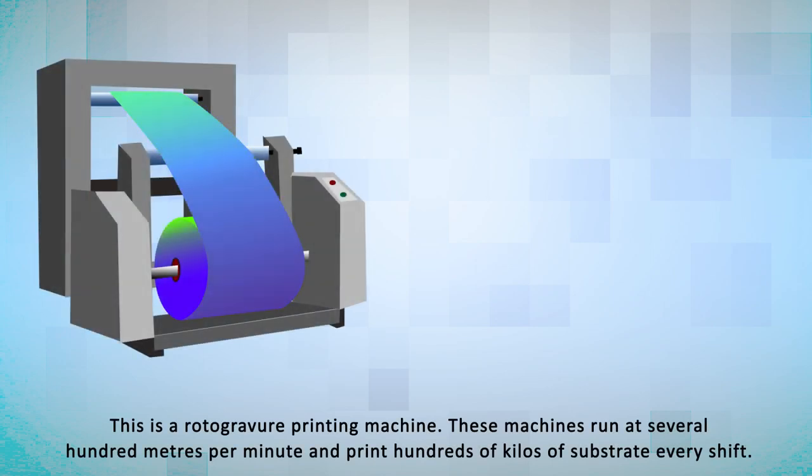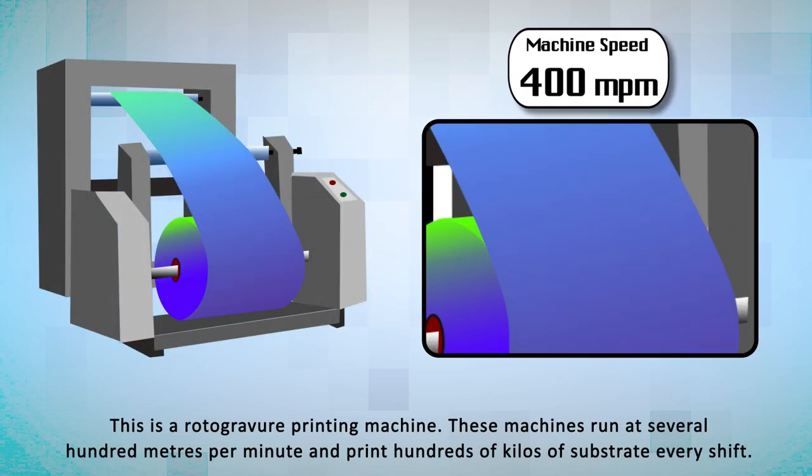This is a rotogravure printing machine. These machines run at several hundred meters per minute and print hundreds of kilos of substrate every shift.